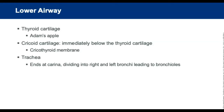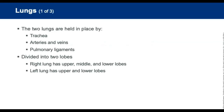The lower airway includes the thyroid cartilage — the Adam's apple — which forms the anterior part of the larynx, and the cricoid cartilage below it. The trachea ends at the carina and divides into the right and left main stem bronchi, which enter the lungs and branch into even smaller airways. The two lungs are held in place by the trachea, arteries, veins, and pulmonary ligaments.